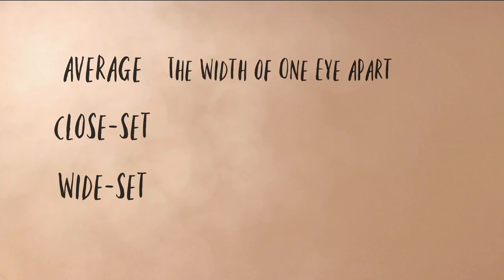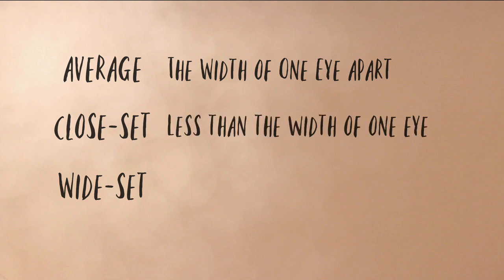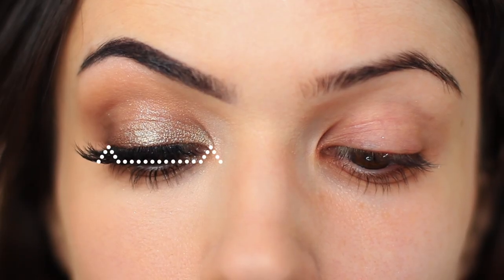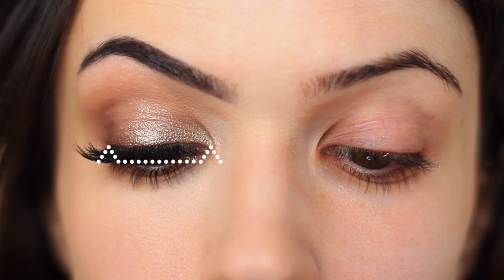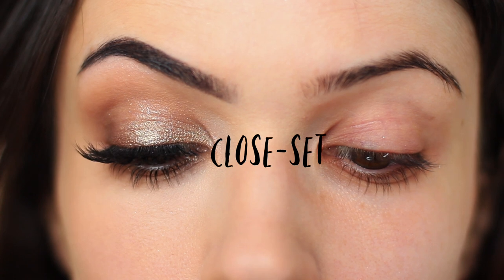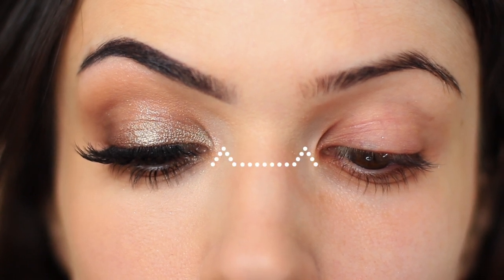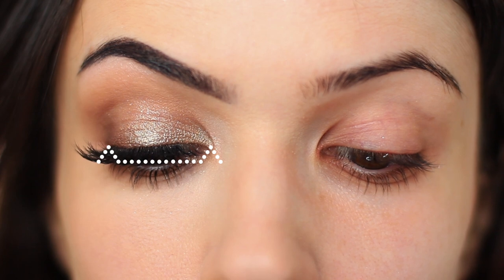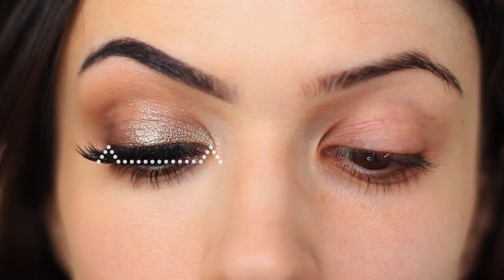The so-called average spacing between the eyes is the width of one eye length apart. If it's less than one eye length apart, it's considered close set. If it's more than one eye length apart, it's considered wide set. So we took the measurement of one eye, placed it in the middle to see where it landed. If you found you were poking yourself in the eye, chances are you have close set. If you had a little room on either side, chances are you have wide set. And if it fits quite snugly right in the middle, then you have an average eye space.